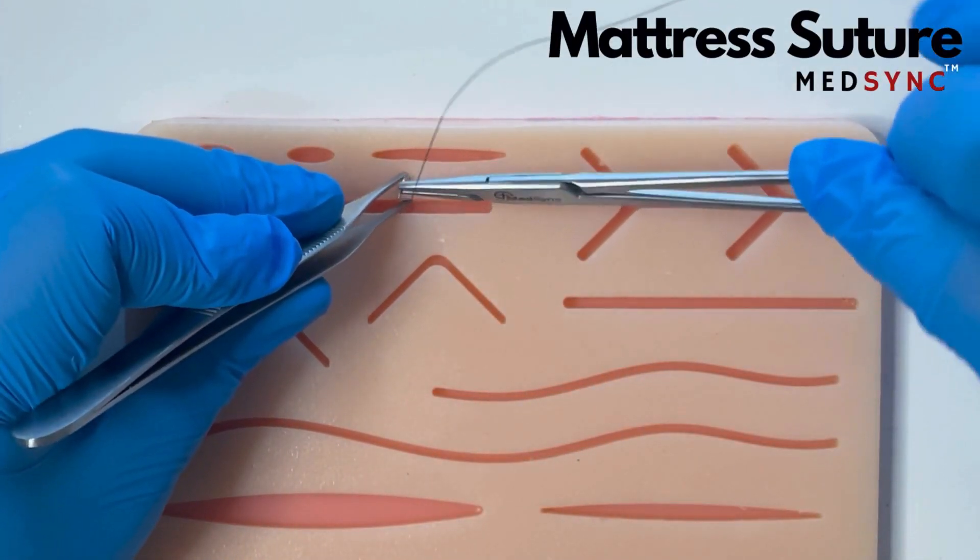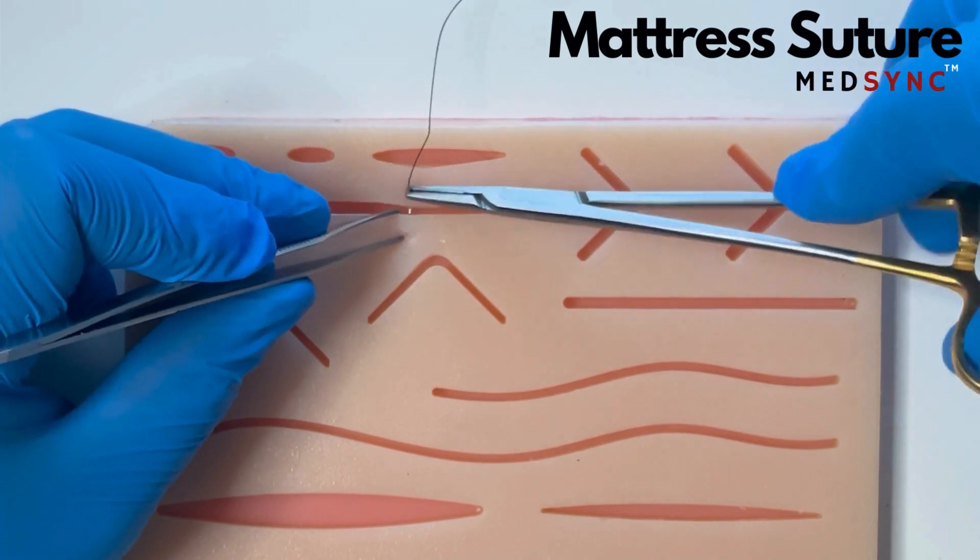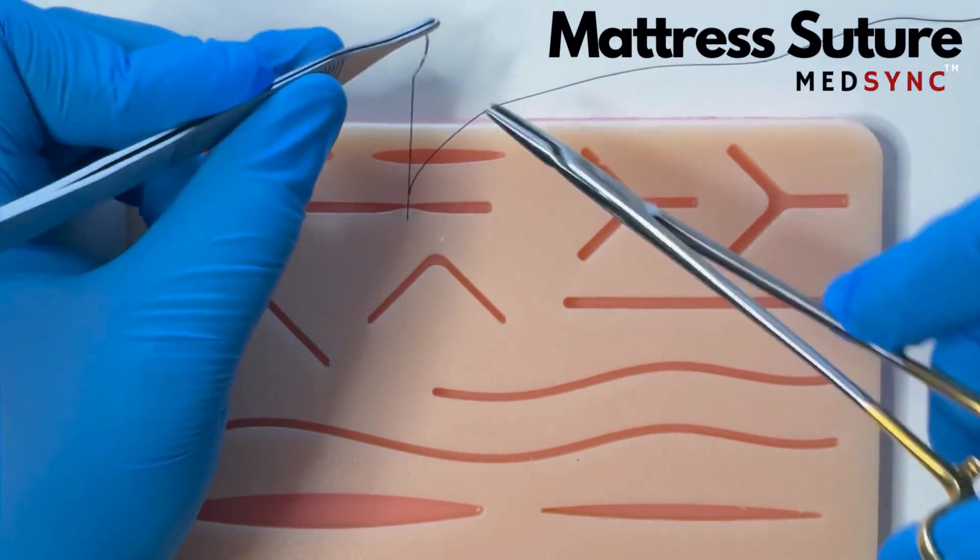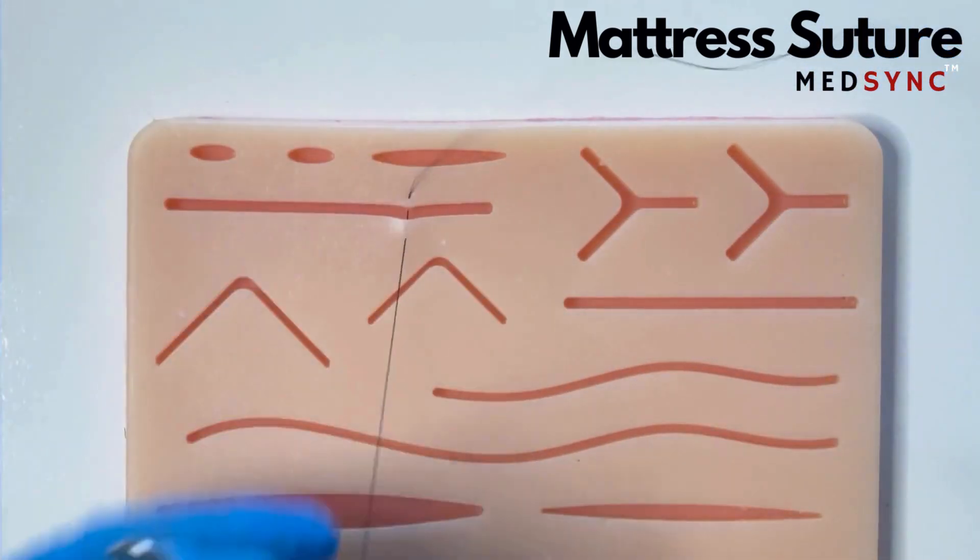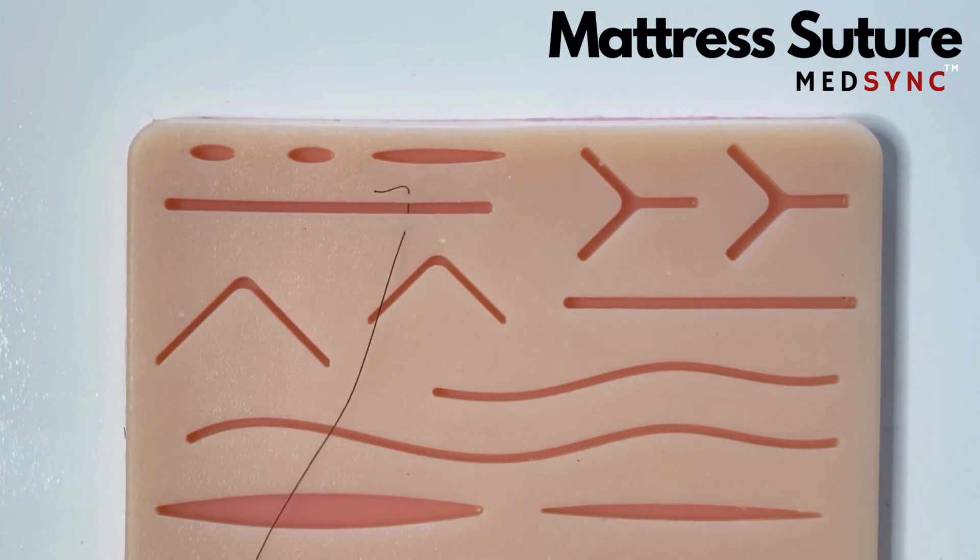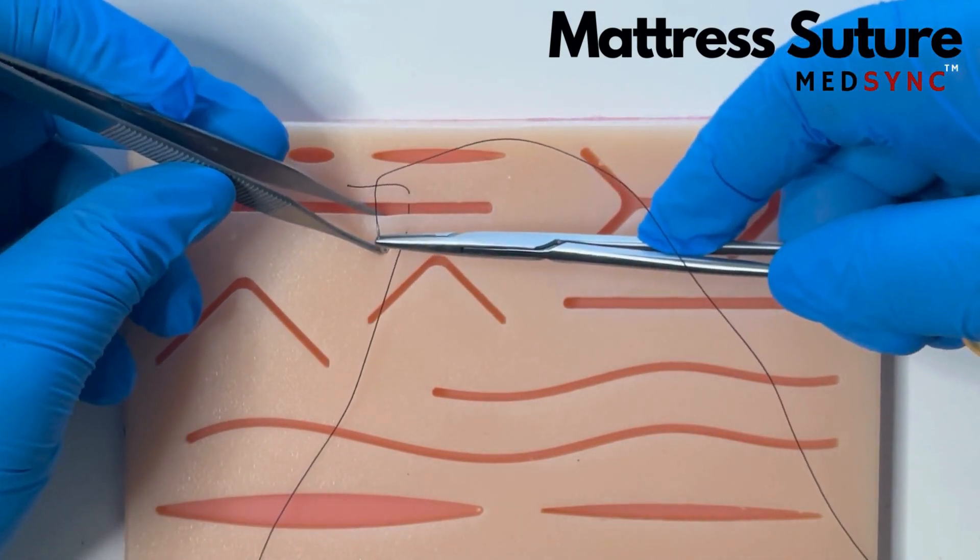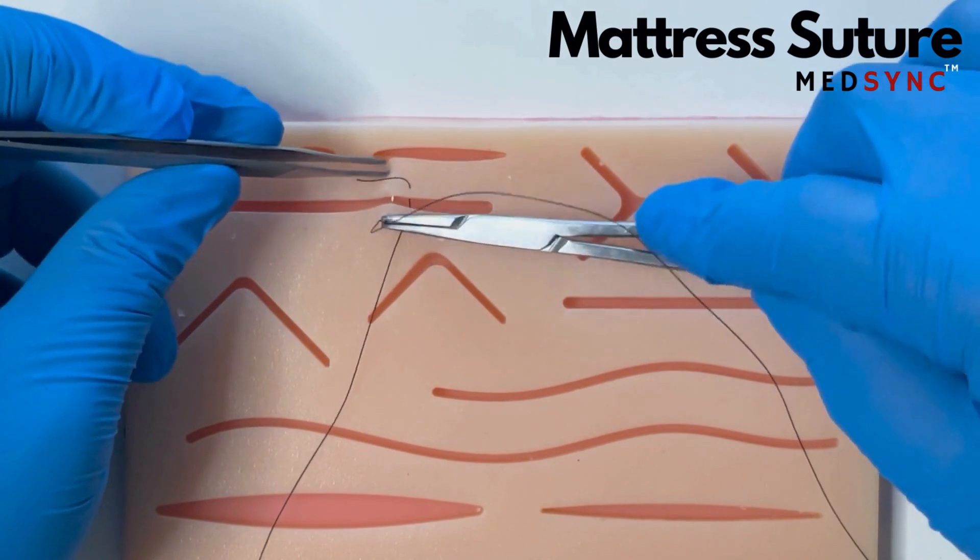The Horizontal Mattress Suture. You take a bite across the wound, you turn the needle around and take a bite back across the wound. You start next to your exit point and you finish next to your starting point.